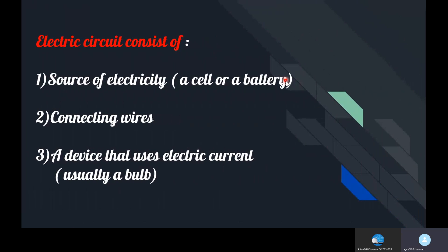Electric circuit consists of: source of electricity, a cell or a battery. In some cases we may need more energy than the energy produced by the cell, so we will use the battery. Connecting wires.